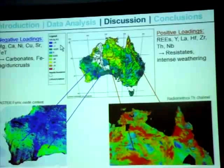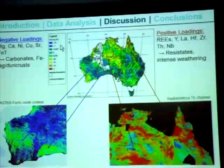I'd just like to point out that PC3 is an excellent felsic versus mafic discriminator. Looking at PC1 for TOS fine-grained samples: the negative loadings are represented by magnesium, calcium, et cetera, which we interpret to represent carbonates and ferricrete or iron duricrust at the surface. They are shown in cool colors, and you can see that the Nullarbor and the Yilgarn region are characterized by high negative loadings.